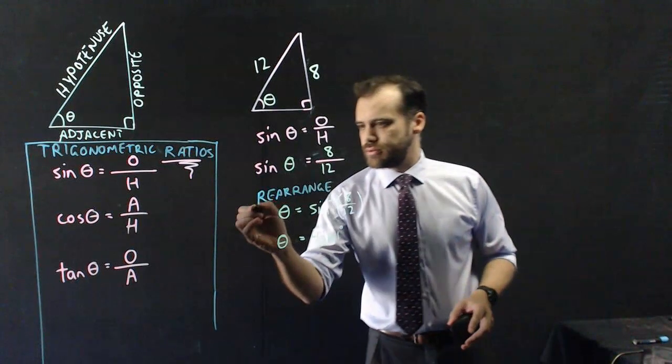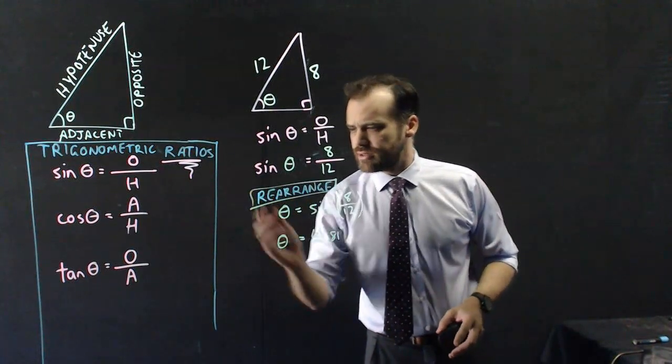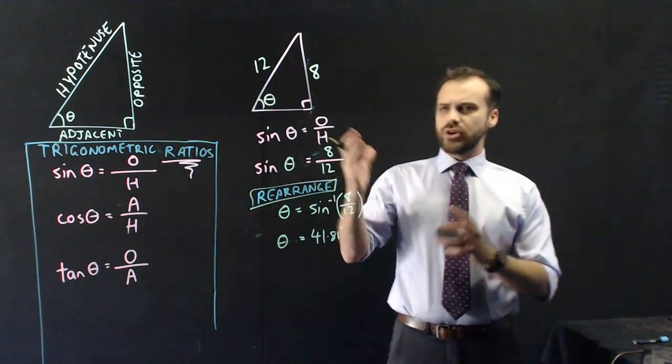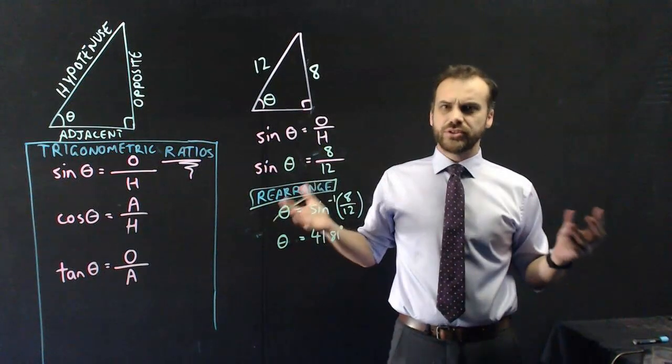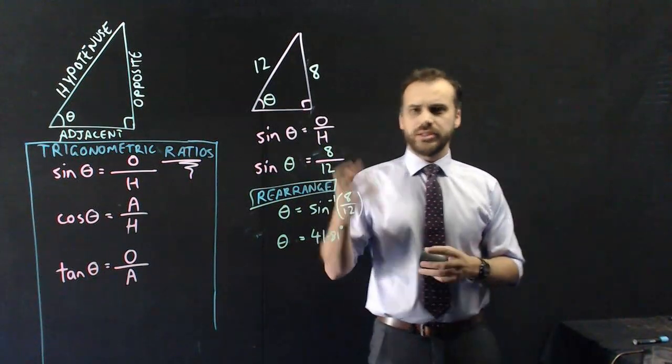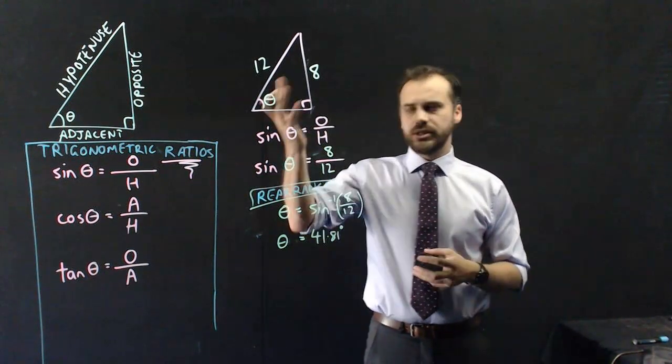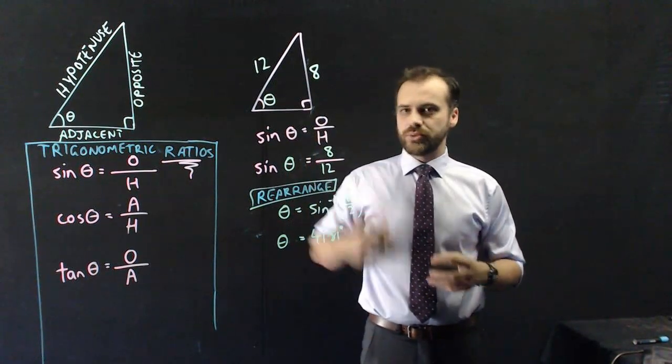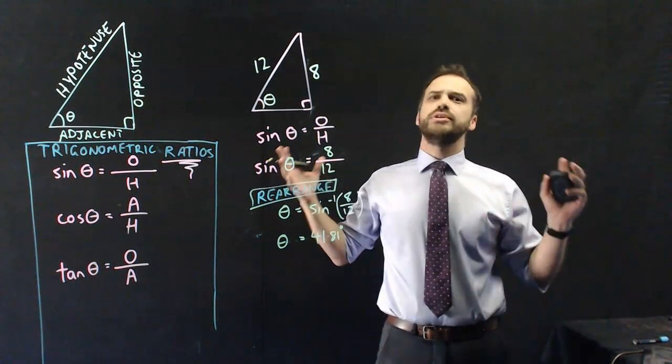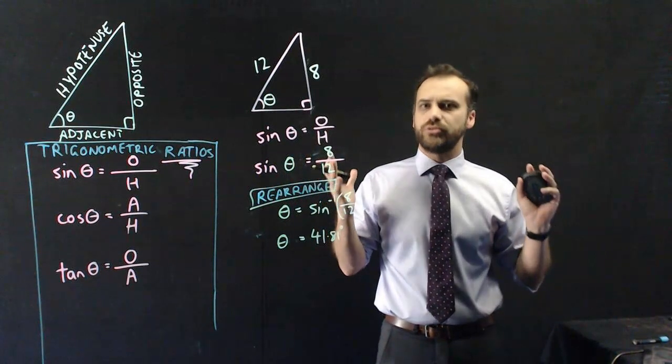Why on earth am I saying this is useless? And the reason is this. Every single time I used this equation, I've had to rearrange it. I had to rearrange it when I didn't know the opposite, I had to rearrange it when I didn't know the hypotenuse, I had to rearrange it when I didn't know the angle. What good is a formula if you have to keep rearranging it?